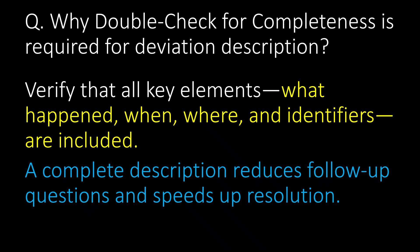Why is a double-check for completeness required for a deviation description? Verify that all key elements — what happened, when, where, and relevant identifiers — are included. A complete description reduces follow-up questions and speeds up resolution.